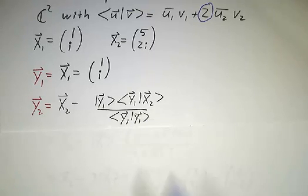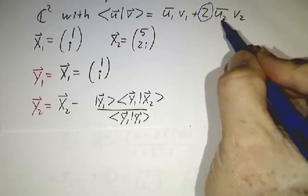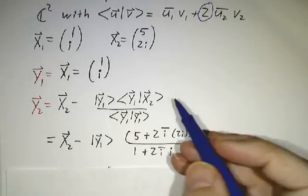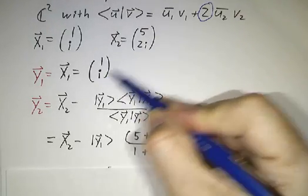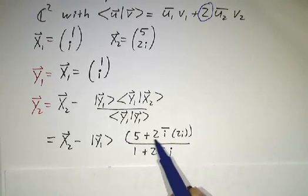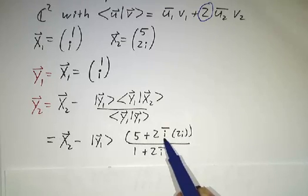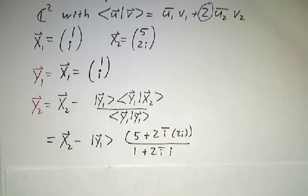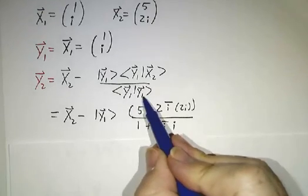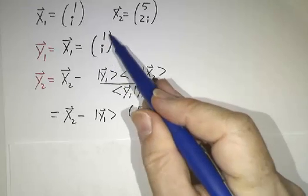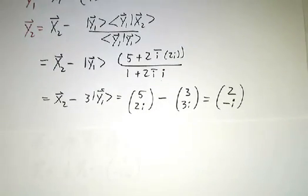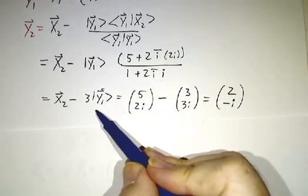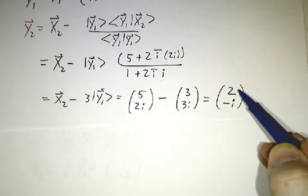And y2 would be x2 minus y1 times the inner product of y1 with x2 over the inner product of y1 with y1. Now for these inner products, we have to use this formula. The inner product of y1 with x2 is the conjugate of 1 times 5, plus twice the conjugate of i times 2i. So we get 5 plus twice i bar times 2i. Of course, i bar is minus i, and minus i times 2i is 2. 2 times 2 is 4, plus 5 makes 9. Likewise, the inner product of y1 with itself is 1 times 1 plus twice i bar times i, and that's 3. So we subtract off 9 thirds of y1, that's 3y1. So we have (5, 2i) minus 3 times (1, i), and what's left over is (2, -i).